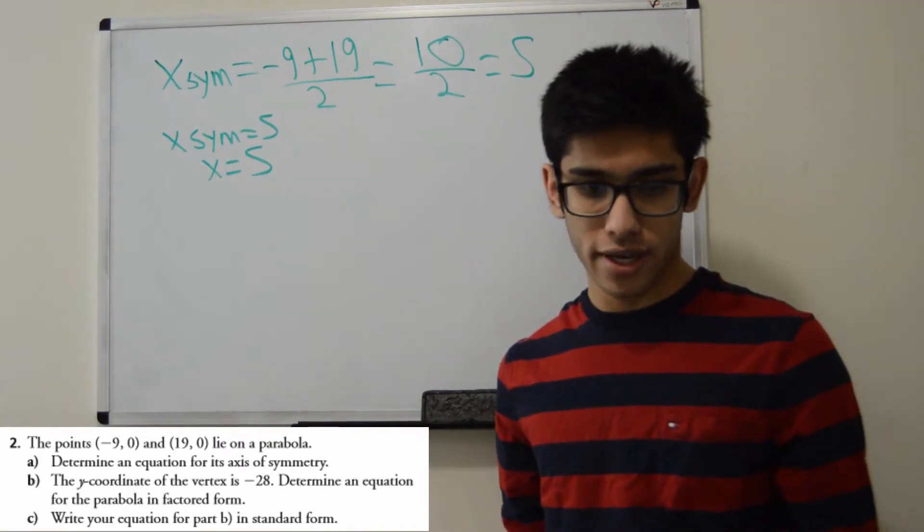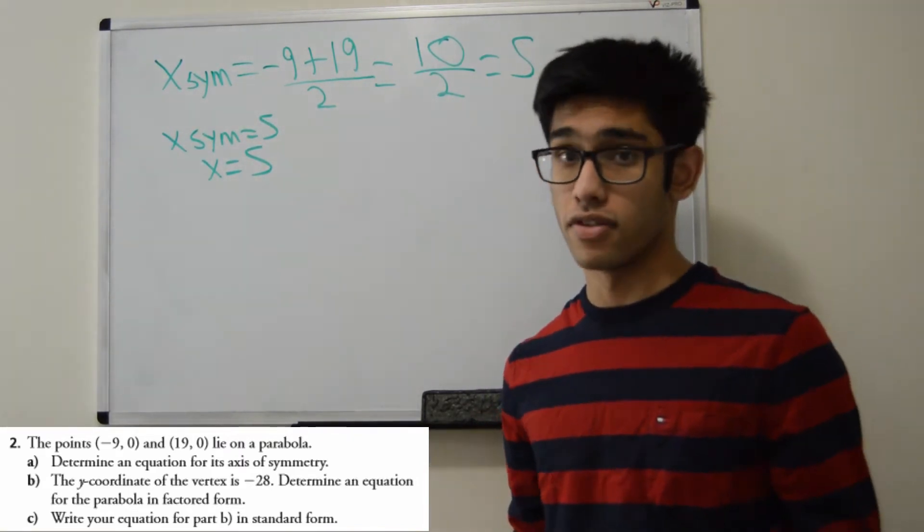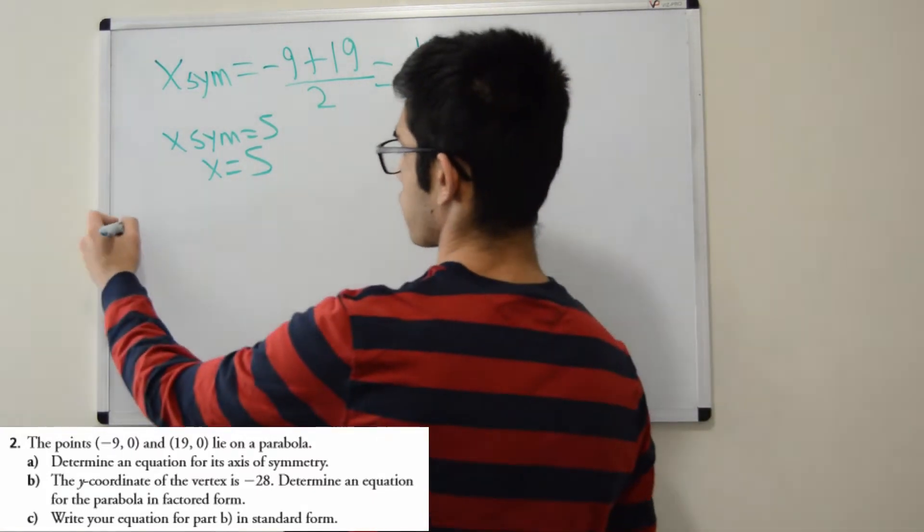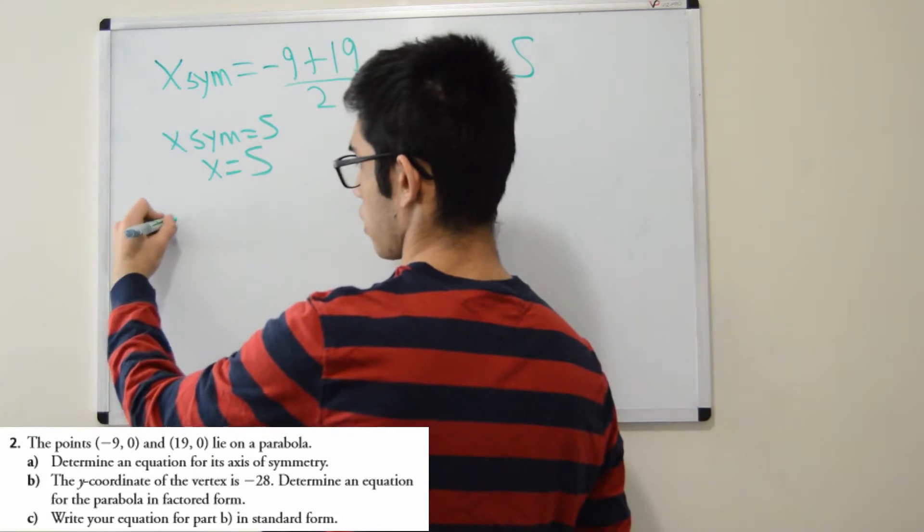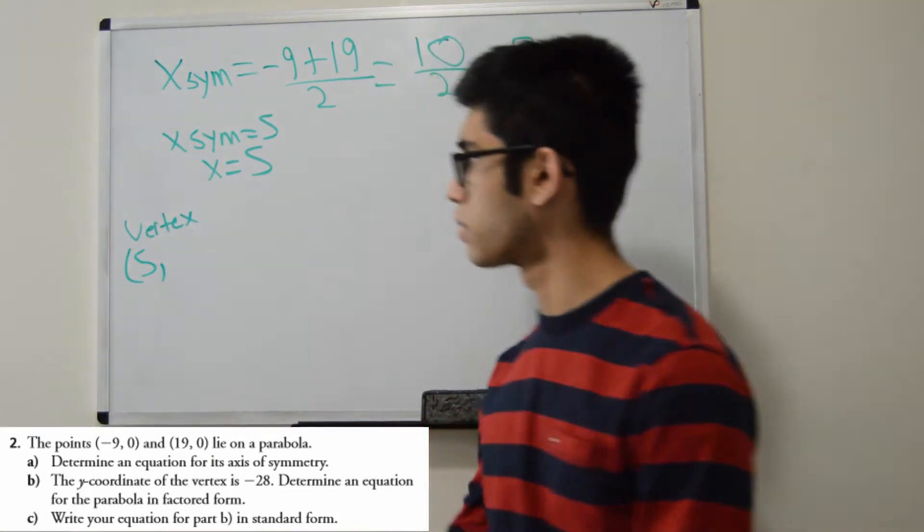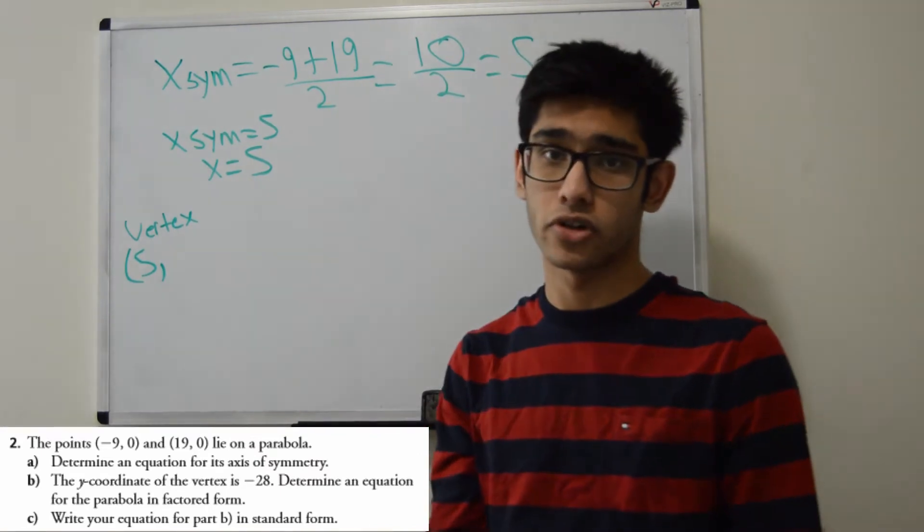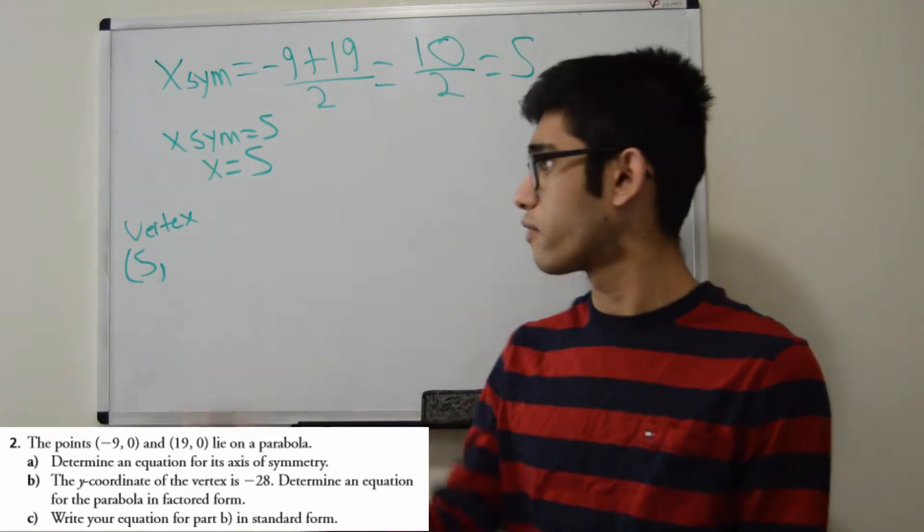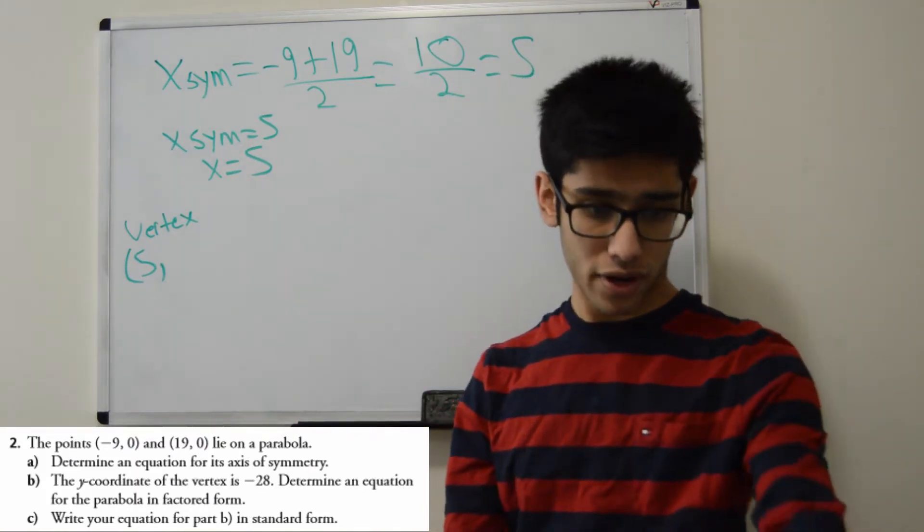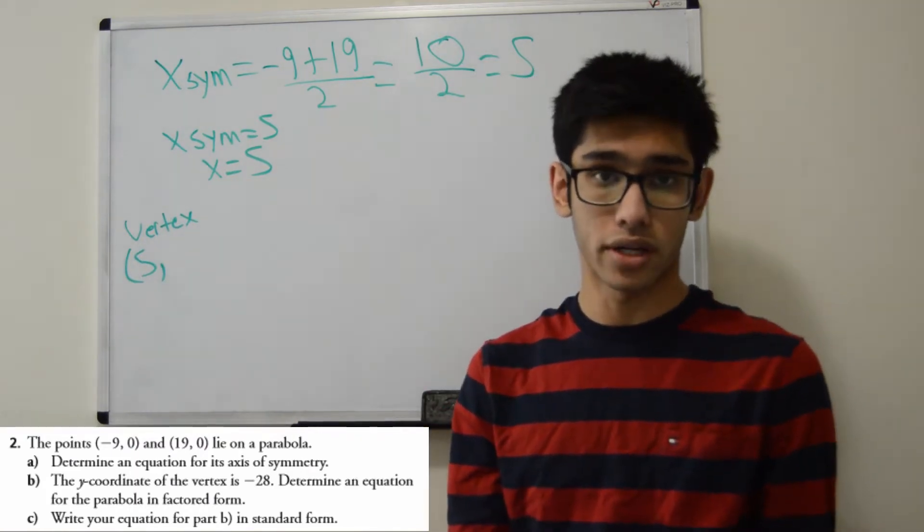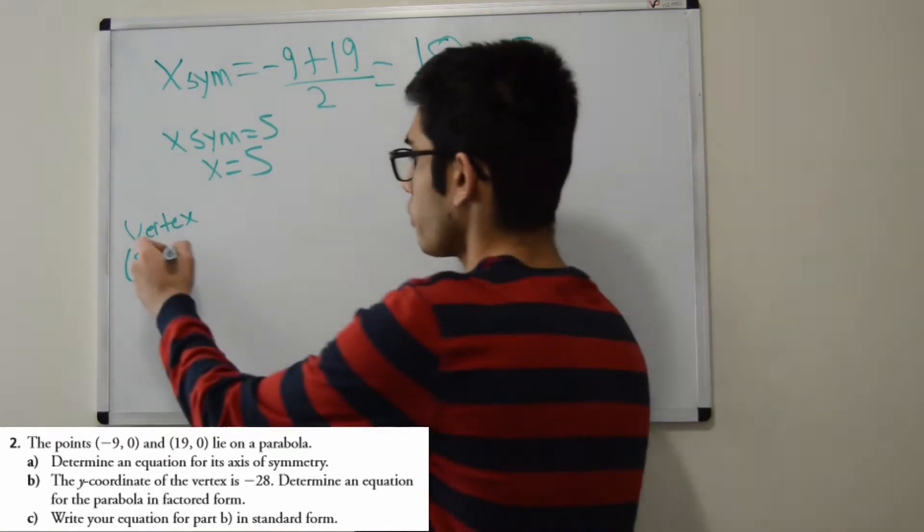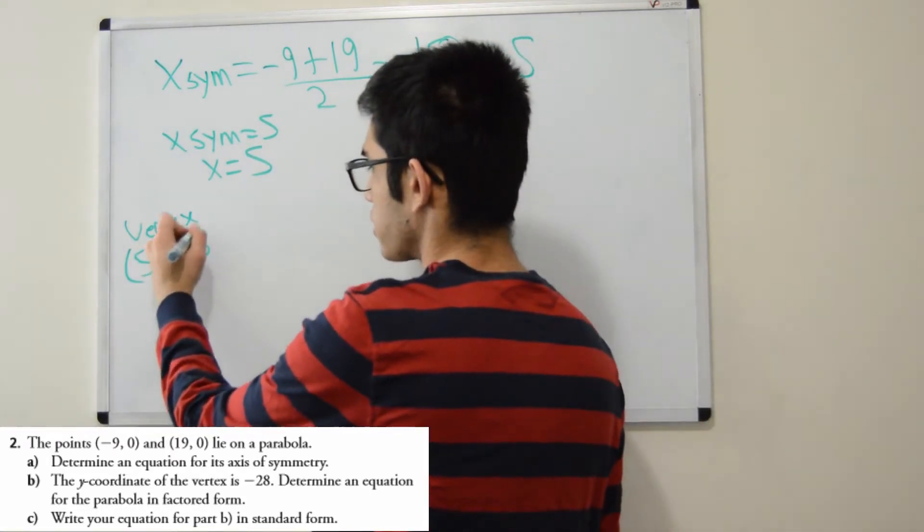So the second question is the y-coordinate of the vertex. So we actually know the x-coordinate of the vertex. Well, how did we get that? That's the axis of symmetry, the line that cuts the graph in half. We already have that, the x-coordinate of the vertex. And now they're giving us our y-coordinate of our vertex, which they tell us is -28. Great, so now we have our vertex.